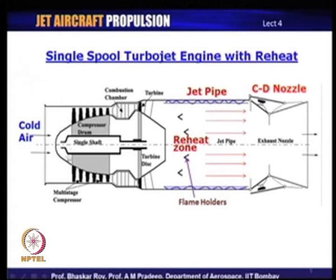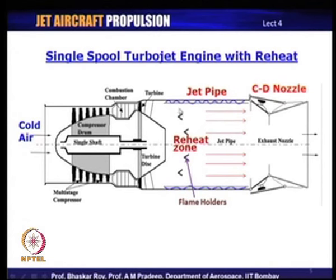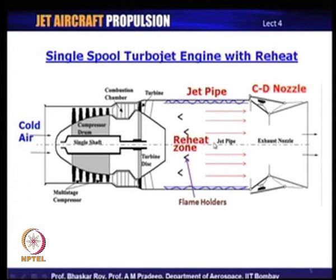Cold air comes into the compression process, goes into the combustion chamber, then we have a turbine that extracts work to run the compressor through a single shaft — this is the mechanical loop between turbine and compressor. Once the turbine has done its work, this high-energy gas is released into the long jet pipe, which is used to raise the gas temperature to an even higher level. One key advantage is that there is no turbine in this reheat zone.